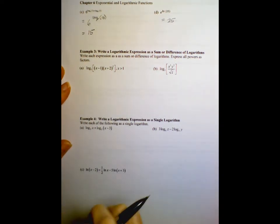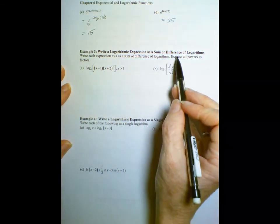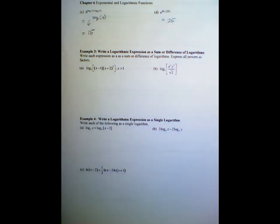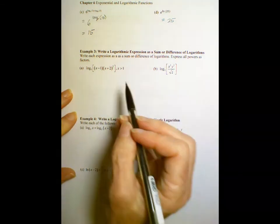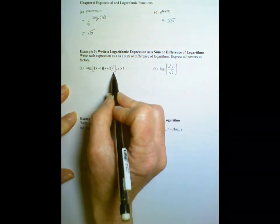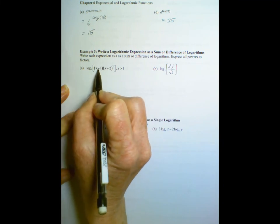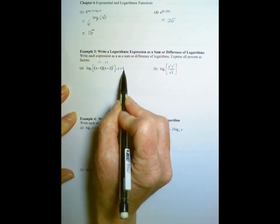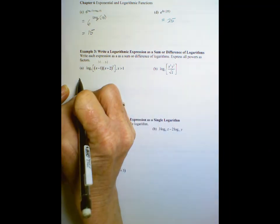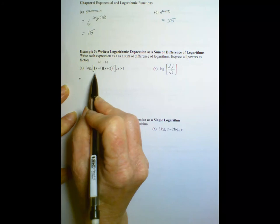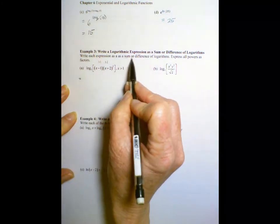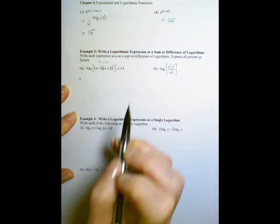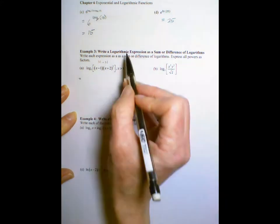Example 3, we want to practice writing expressions as a sum or difference of logs, so breaking it out into either a sum or a difference. In this case we have log base a of, this is like an m times n situation, and for domain purposes they tell us x is greater than 1. But what we need to do now is write this as a sum or difference, so which would it be? Since we have a product here, will it be a sum or a difference? It will be a sum.